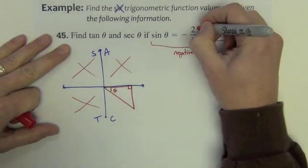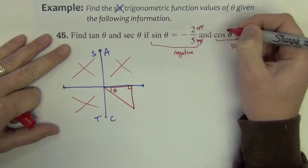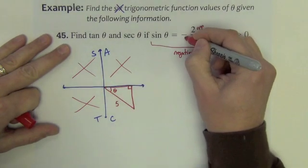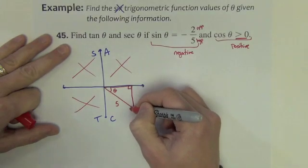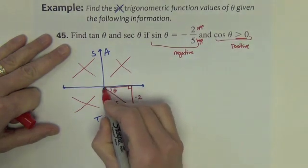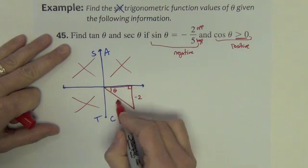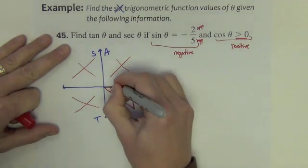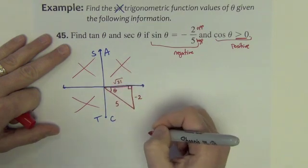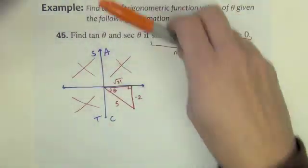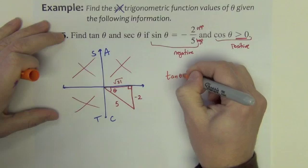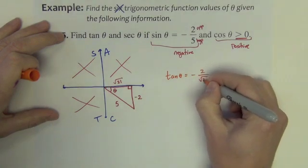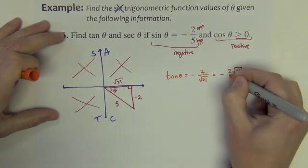Let's label the triangle. Sine is opposite over hypotenuse. The value is negative, and the hypotenuse is always positive, so the opposite side goes downward — making it a negative number. Using the Pythagorean theorem: the missing side is the square root of 25 minus 4, which is the square root of 21. Tangent of theta is opposite over adjacent: negative 2 over the square root of 21, which rationalizes to negative 2√21 over 21.